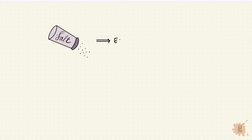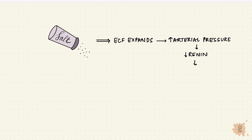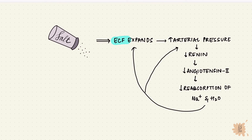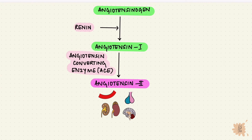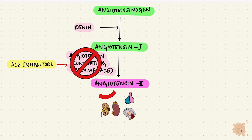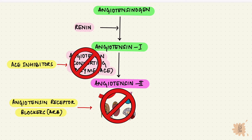When there's a lot of salt intake, the salt causes ECF to expand, arterial pressure rises, so reduced renin, reduced angiotensin-2, less reabsorption of salt and water, and so the ECF volume and arterial pressure come towards normal. Two tie-ins here: angiotensin-converting enzyme inhibitors like captopril inhibit the ACE enzyme, reducing angiotensin-2 formation; versus angiotensin receptor blockers (ARBs) like losartan, which block the angiotensin receptors and prevent the action of angiotensin-2.